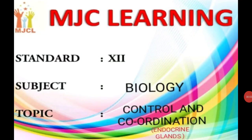Hello students, welcome to MGC Learning. Today we are going to study chapter number nine of biology. The name of the chapter is Control and Coordination. In our human body, control and coordination are carried out by two systems: one is the nervous system and another is the endocrine system. Together they are also called the neuro-endocrine system, but today we will focus only on the endocrine system.